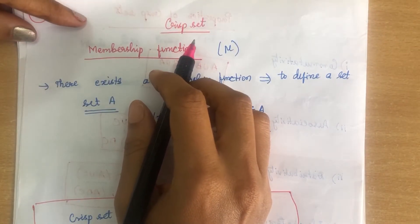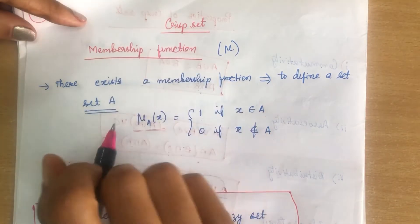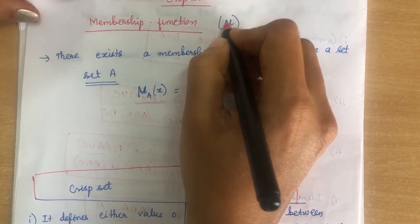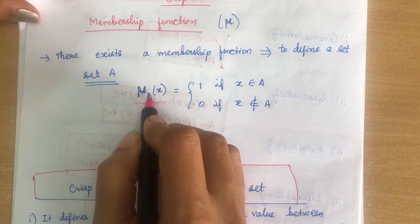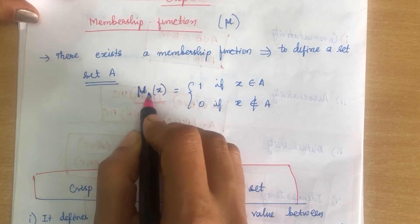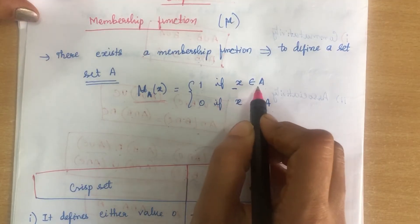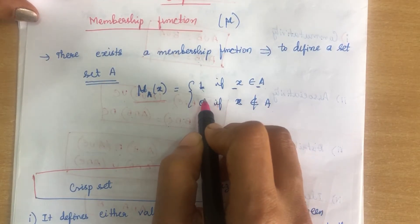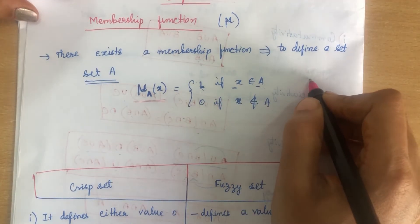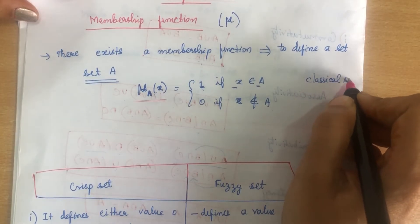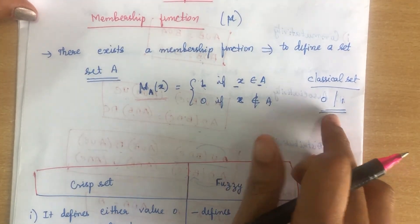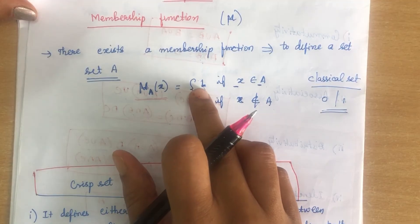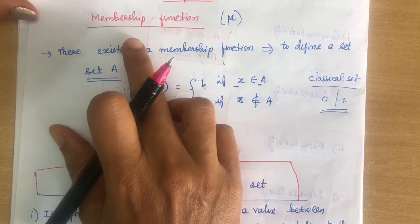Next, the membership function of the crisp set. We represent the membership function by the symbol mu (μ). The membership function μ_A(x): if element x belongs to set A, the membership value is 1. If x does not belong to A, the value is 0. The classical set is essentially a Boolean set — it takes only the values 0 or 1.